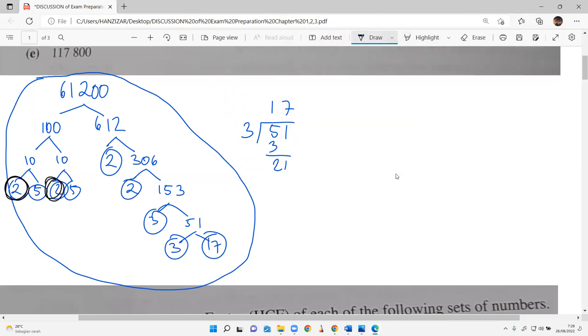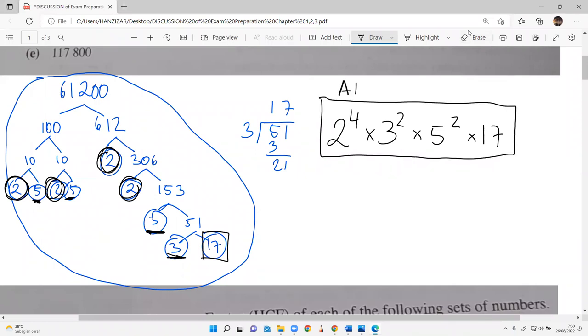After we get all the numbers here, try to find the answer in power form: 1, 2, 3, 4. So 2 power 4, times 3 power 1. How many 5s are there? 5 power 2, we have 2 numbers of 5. Times 17. This is the expected answer and you have to provide the working as well.